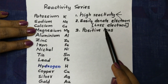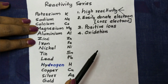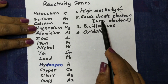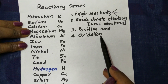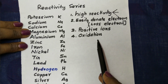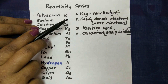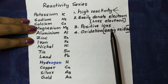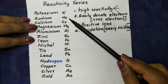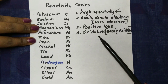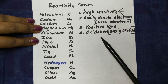The loss of an electron is called Oxidation. These metals undergo oxidation. To donate an electron means to lose an electron — that is oxidation. High reactivity metals easily undergo oxidation, meaning they are easily oxidized. High reactivity metals easily donate electrons, form positive ions, and this tendency means they easily undergo oxidation.